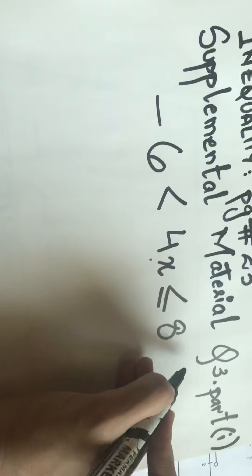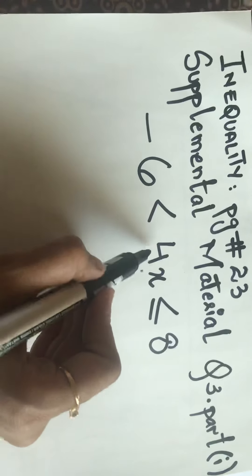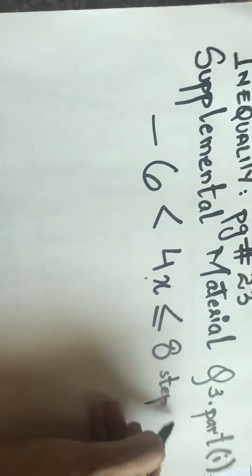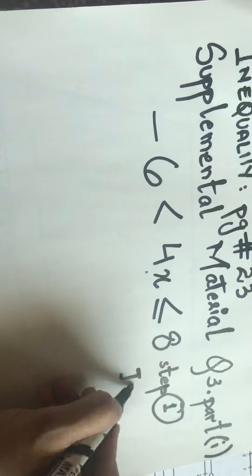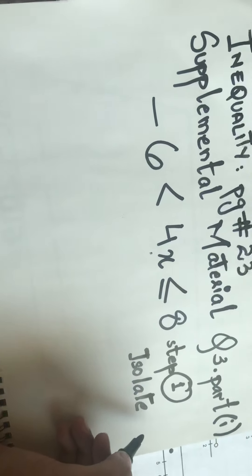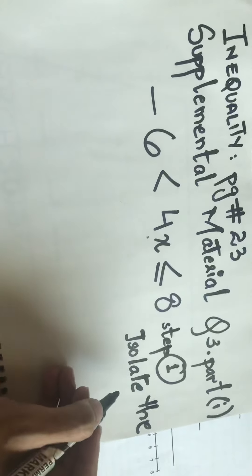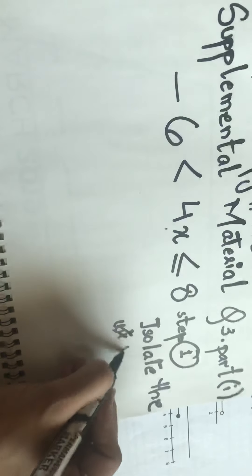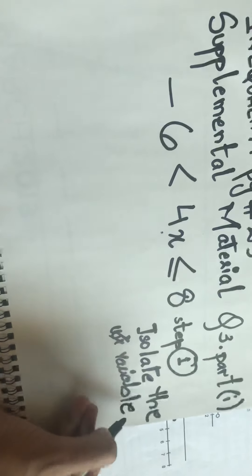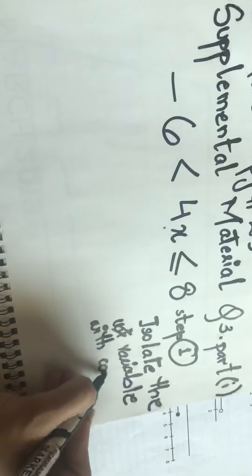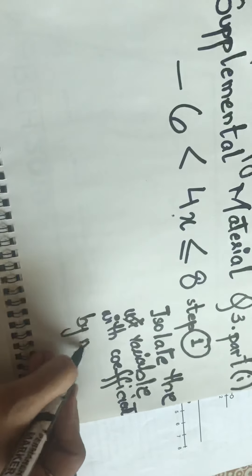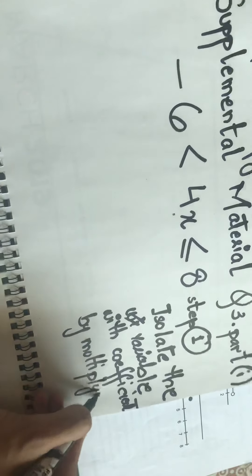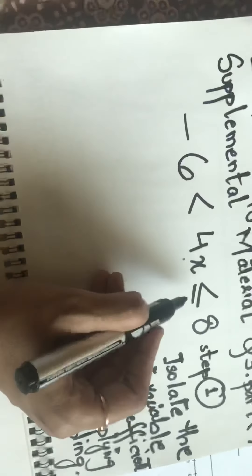The first step to solve this is to isolate the variable. Isolate means to make the variable X stand alone — without any coefficient, and without any constant added or subtracted to it. Step one: isolate the variable with its coefficient.